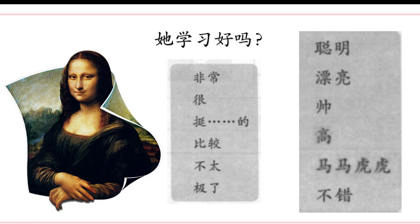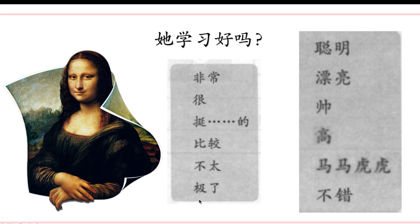And the next question: 她学习好吗？Let's guess — maybe 蒙娜丽莎 is not very good at study. 她学习不太好. Or maybe she is good: 蒙娜丽莎，她学习好吗？她学习非常好，她学习很不错，她学习挺不错的，她学习比较不错，她学习好极了. Remember, we can use 好 with all adverbs, but 不错 cannot be used together with 不太 or 极了.